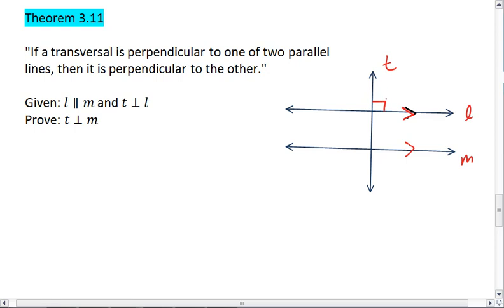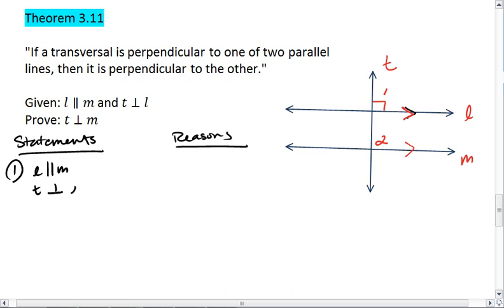So let's go ahead and label these angles 1 and 2. Let's number our steps here. l is parallel to m, and t is perpendicular to l. These are givens.